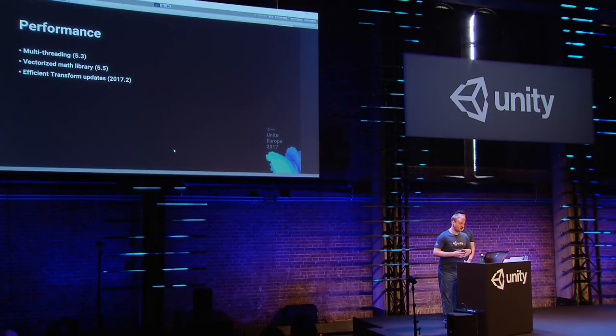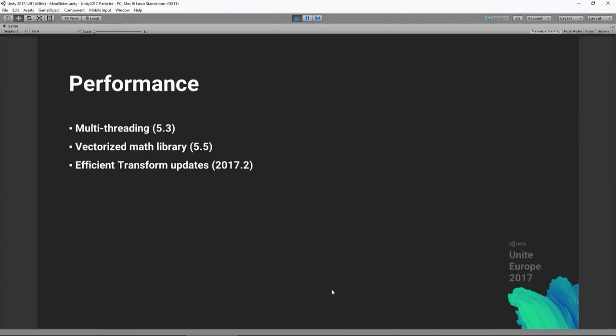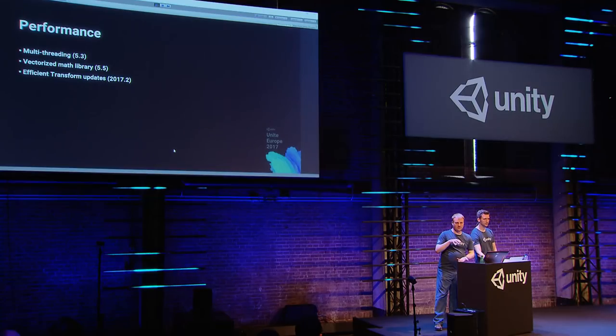Another improvement is efficient transform updates. For a deeply nested particle system we previously had to traverse the entire transform hierarchy every frame to calculate the system's position. Now we're aware if the system has moved, so for static systems it only happens once and we cache the result. If you have lots of static systems you should see improvements there.